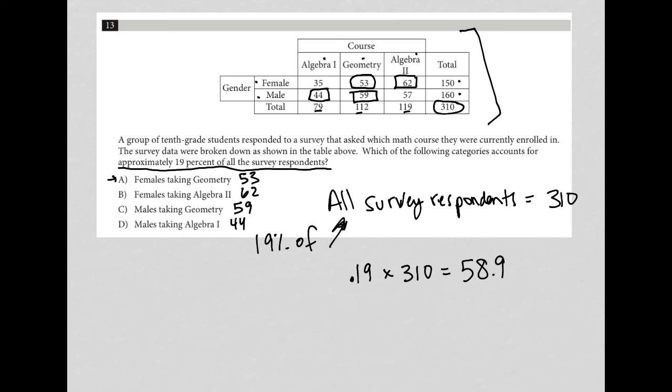So which one of these categories fits the 19% of 310 that we just found, this 58.9? Well, that is closest to 59, which came from males taking geometry. So that's our final answer.